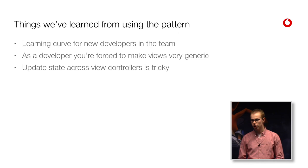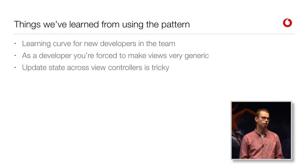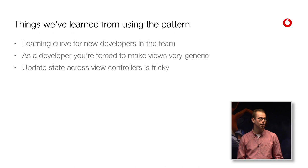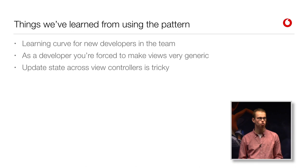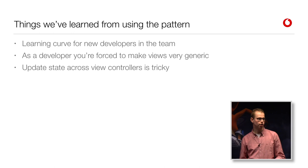So what did we learn from using this pattern? The first thing is that new developers on the team have a big learning curve. Not only is the architecture a bit strange at first, but there are a lot of generic names in the project — generic views, use cases — and you don't know what they are or what they do. Because of the generic names, it's hard to understand what it's doing. The second thing is a big benefit in my opinion: the developer is forced to make views very generic. Because the back-end can load the view in different places, you're forced to make it generic enough that the back-end can use it on different places.